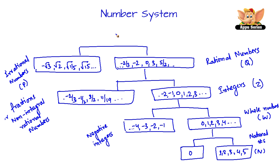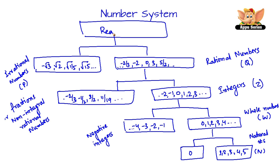All together, we have the real numbers. Everything put together, we've got this group called as the real numbers. Real numbers are denoted by the capital letter R. So all rational and irrational numbers make up the collection of real numbers.